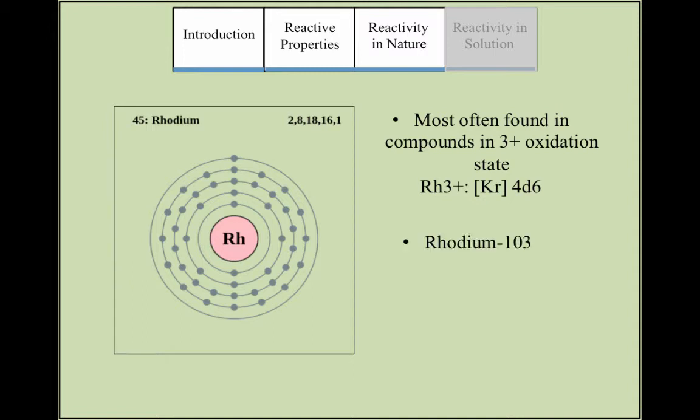Furthermore, rhodium-103 is its only naturally occurring stable isotope, but rhodium also has several radioactive isotopes with relatively short half-lives.